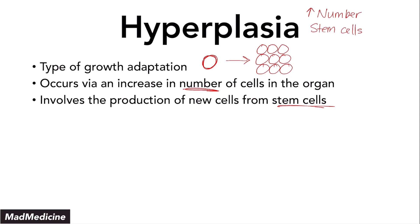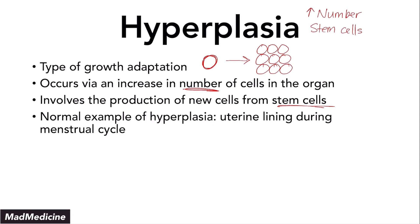The production of new stem cells allows our body to create more tissue and accommodate whatever stress it is under. You have normal, physiologic examples of hyperplasia, and you have pathologic examples of hyperplasia — this is something you need to understand really well because it can get very confusing very fast. Let's talk about a normal example of hyperplasia. This example would be the uterine lining during a normal menstrual cycle.